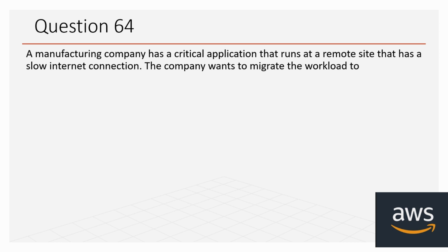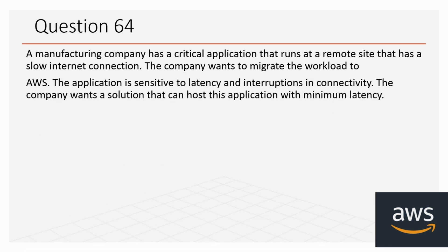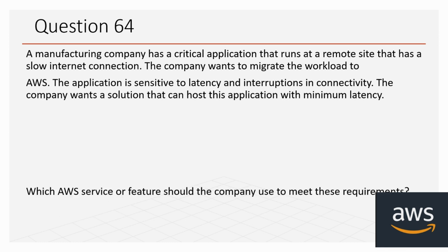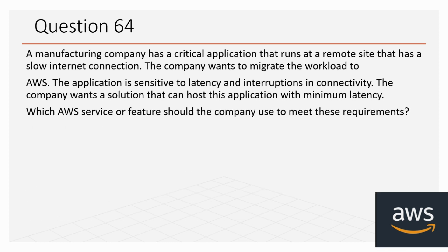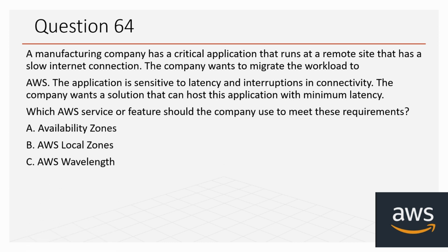Question 64: A manufacturing company has a critical application that runs at a remote site with a slow internet connection. The company wants to migrate the workload to AWS. The application is sensitive to latency and interruptions in connectivity. Which AWS service or feature should the company use? Options: Availability Zones, AWS Local Zones, AWS Wavelength, AWS Outposts. The correct answer is D, AWS Outposts.